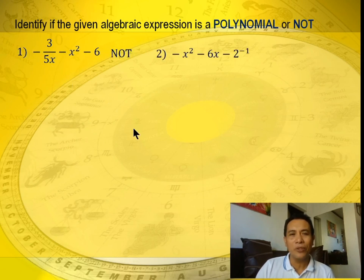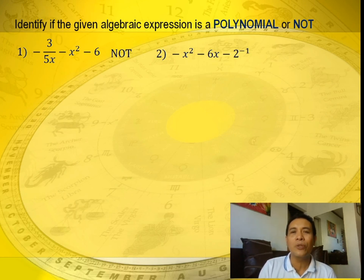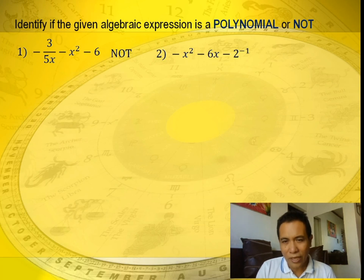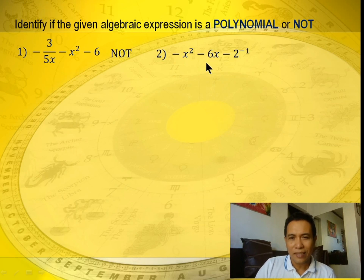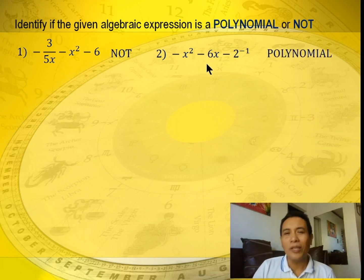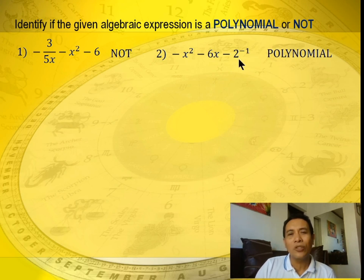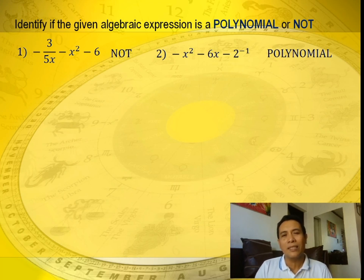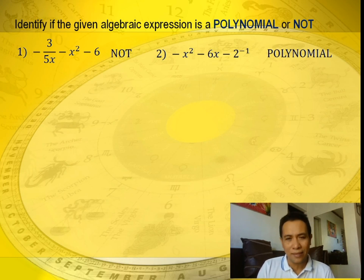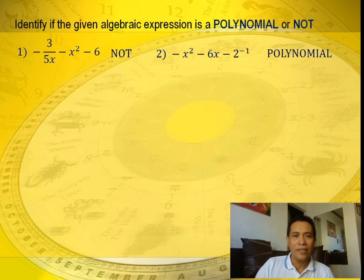Example number 2: negative x squared minus 6x minus 2 raised to negative 1. Is this an example of a polynomial or not? This is a polynomial. Although the exponent of 2 is negative 1, 2 is not a variable — it is a constant. It's okay if the exponent of a constant is negative 1, as long as the exponent of the variable is a whole number.